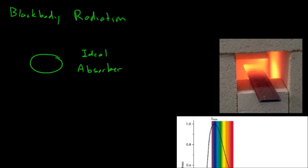And what I mean by that is, let's say I have some red light that's being shone on this object, and I have some yellow light, and I have some blue light. If this is an ideal absorber, all of these wavelengths of light are going to be completely absorbed by this object.